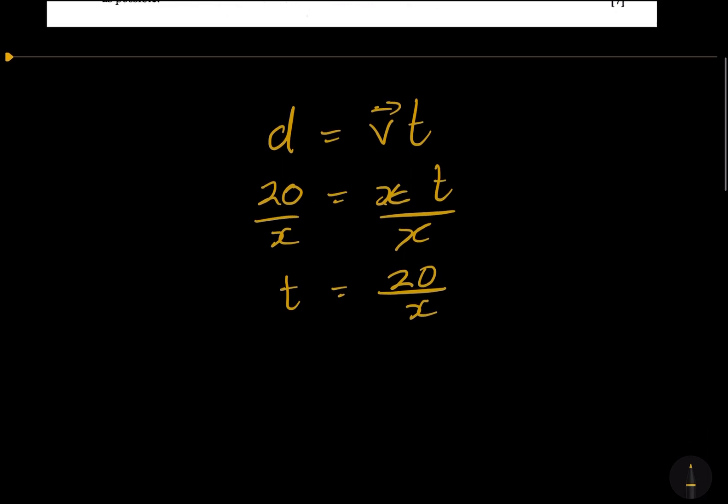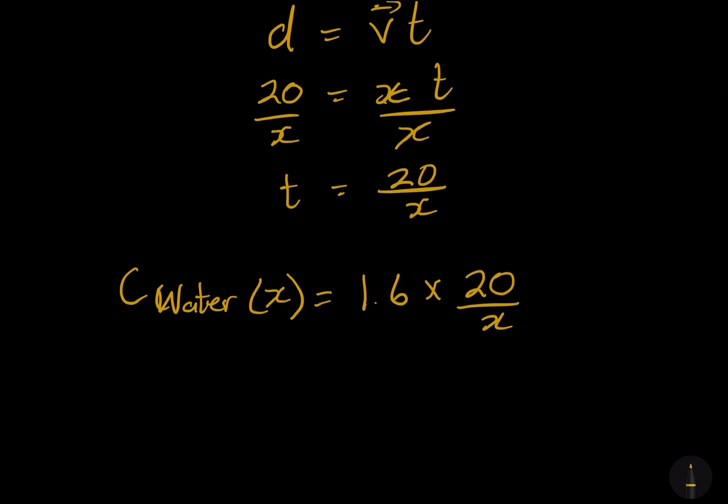Now let's take the cost of water. The cost of water in terms of x would simply be the rate at which they bill water, which is 1.60 per hour, multiplied by the time. What is our time? It's 20 over x. If we multiply those, we get a value of 32 over x. This is how we would calculate the cost of water - the cost would be measured by this formula.